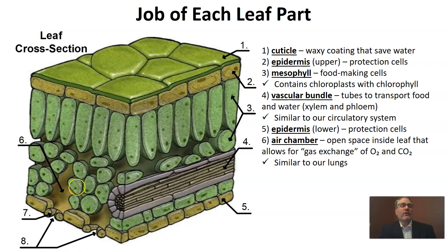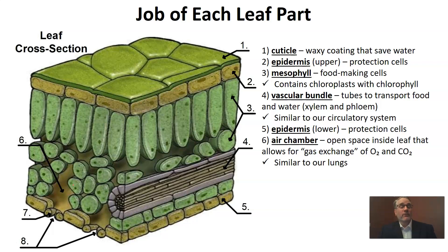We already talked about the lower epidermis — those epidermis cells are used for protection of what's inside the leaf. Now let's look at the air chamber — this is an open space inside the leaf. We need some open space between the mesophyll cells because it allows for gas exchange. Gas exchange also happens in your lungs — you breathe in and remove oxygen from the air, and breathe out air with more carbon dioxide. Plants do the opposite: for photosynthesis they need carbon dioxide, so gases diffuse into the air chamber and carbon dioxide is absorbed, while oxygen — the waste product of photosynthesis — exits through the air chamber.